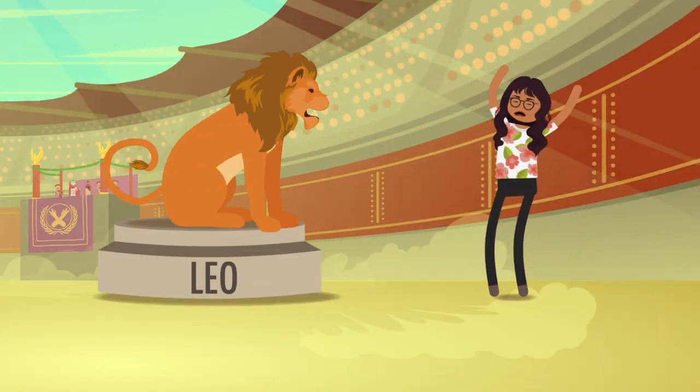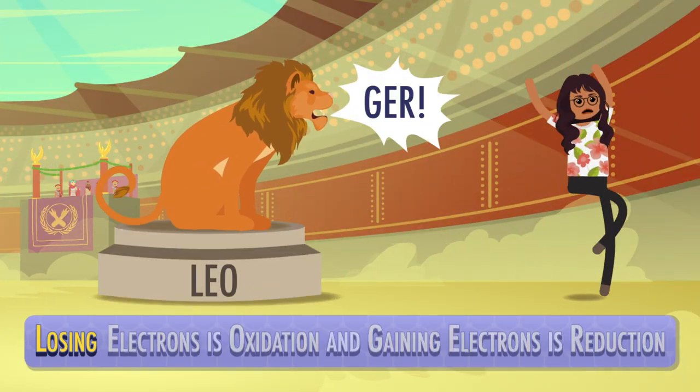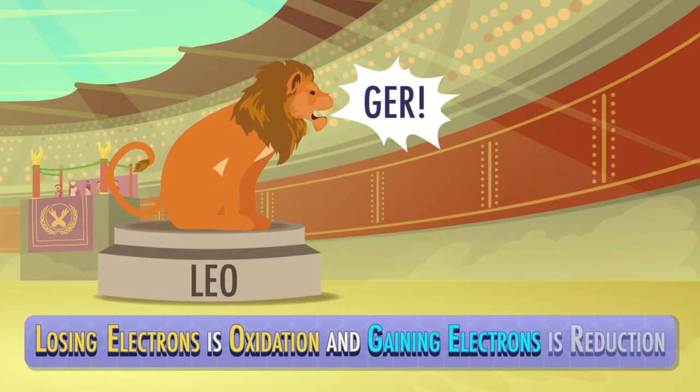Speaking of electrons, in Crash Course General Chemistry, we defined oxidation as the loss of electrons and reduction as the gain of electrons. Or as I remember it, Leo the lion says GERP: losing electrons is oxidation, and gaining electrons is reduction. These rules are true for organic molecules, but it can sometimes be easier to track the number of carbon-oxygen bonds we gain or lose.